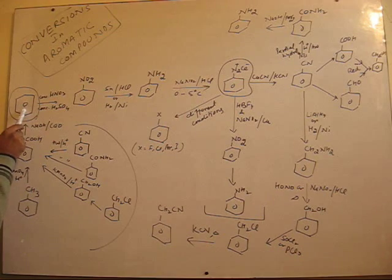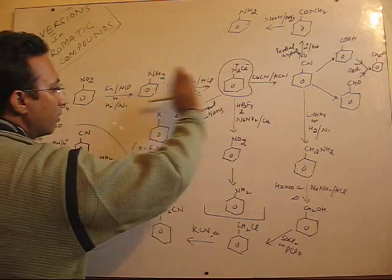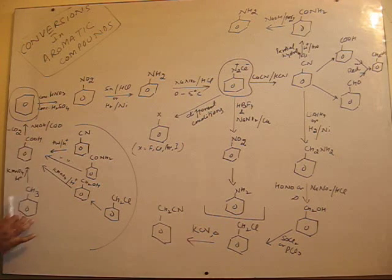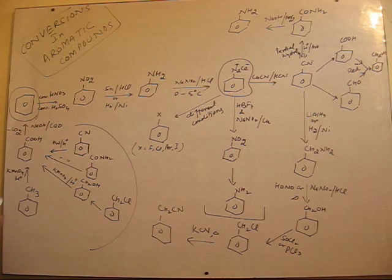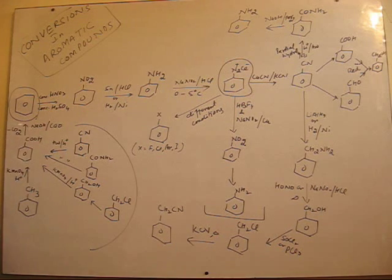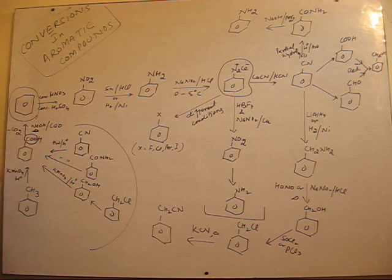Benzene can be changed to compounds on this side. As conversions can be from all directions, let us see by which common methods we can prepare benzene. Benzene can be prepared when benzoic acid undergoes a decarboxylation reaction — when it is heated with sodamide, there is formation of benzene with removal of carbon dioxide.